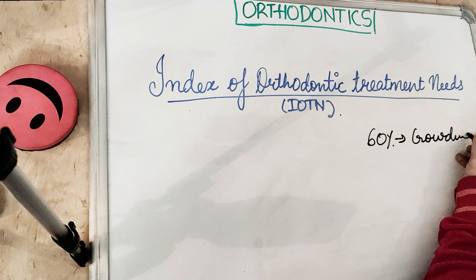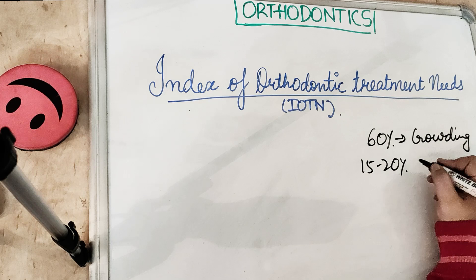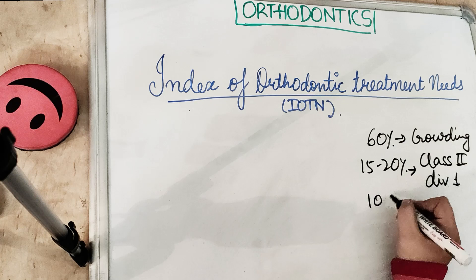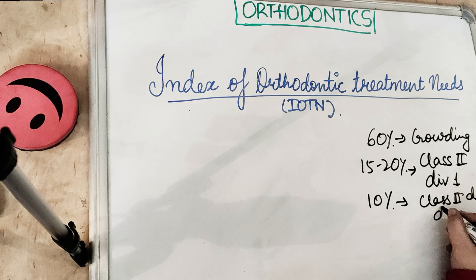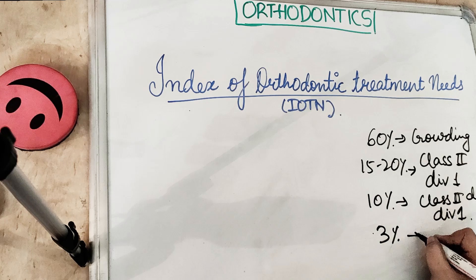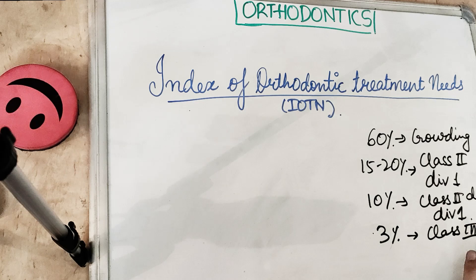Approximately 60 percent of people are seen with crowding, especially in the lower anterior region. 15 to 20 percent are seen with Class 2 Division 1 malocclusion, in which the maxillary anterior teeth are proclined. 10 percent are seen with Class 2 Division 2, in which the upper anterior teeth are retroclined with reduced overjet — whereas Class 2 Division 1 has increased overjet. 3 percent are seen with Class 3 malocclusion, in which the mandibular anterior is proclined.